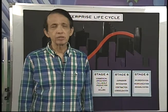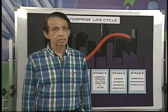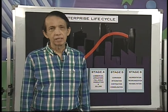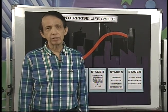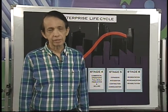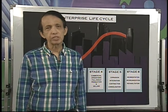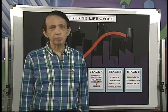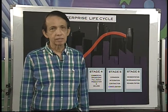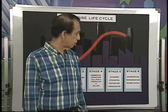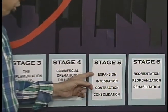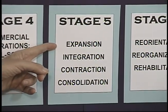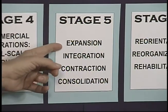Depending on the quality of the product, service, or management of the enterprise, and depending on industry and market trends, there are four possible scenarios in the fifth stage of the enterprise lifecycle. These scenarios are expansion, integration, contraction, or consolidation.